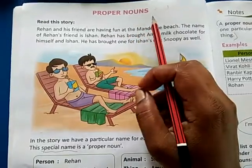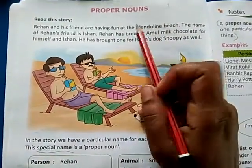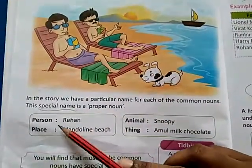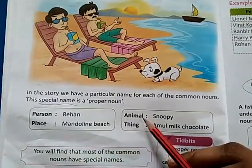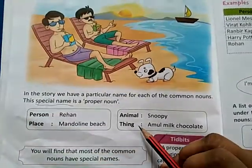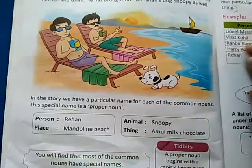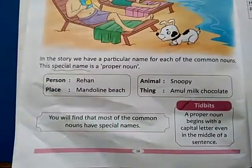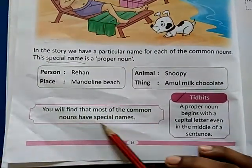Common noun ke liye ye special name hai — to hum unko kya bolte hai? Proper noun. Jaisi ki person — Rehaan hai, place — Mandolin beach, animals — Snoopy, thing — Amul milk chocolate. Ye kya hai? Special name hai. This special name is a proper noun. In special names ko hum kya kehte hai bacho? Proper noun kehte hai. You will find that most common nouns have a special name.